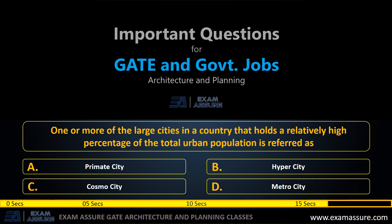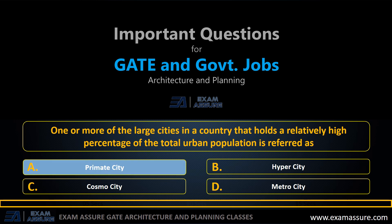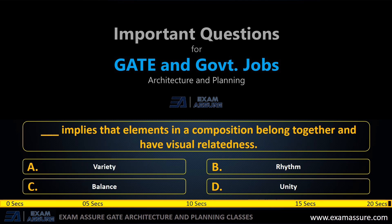Next question: One or more of the large cities in a country that holds a relatively high percentage of the total urban population is referred to as — option A: primate city, option B: hyper city, option C: cosmo city, option D: metro city. The correct answer is primate city.